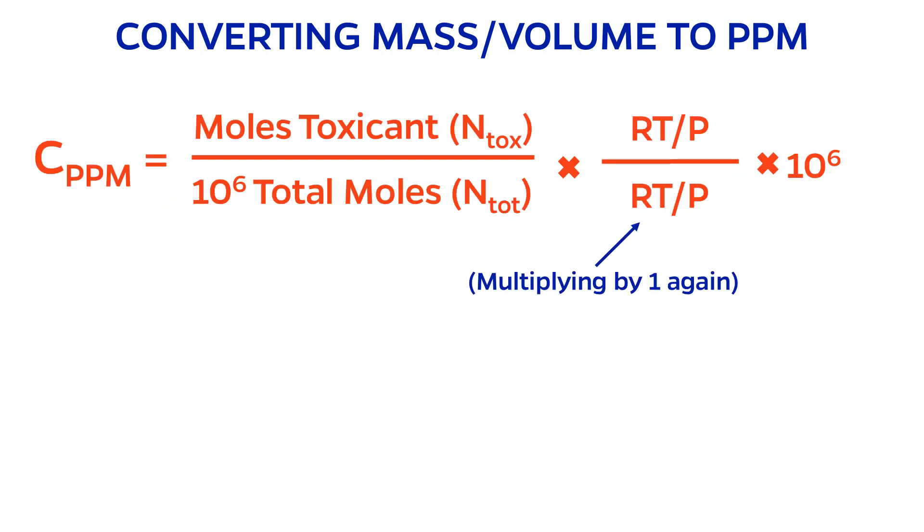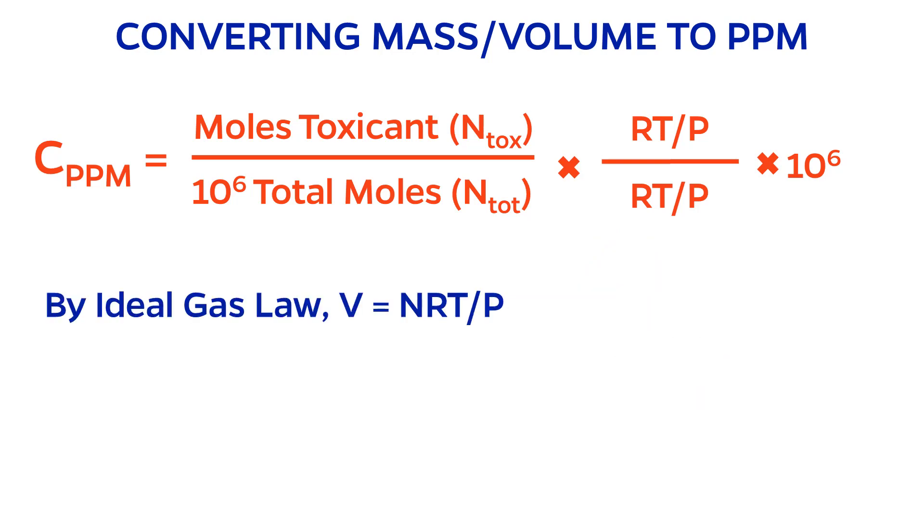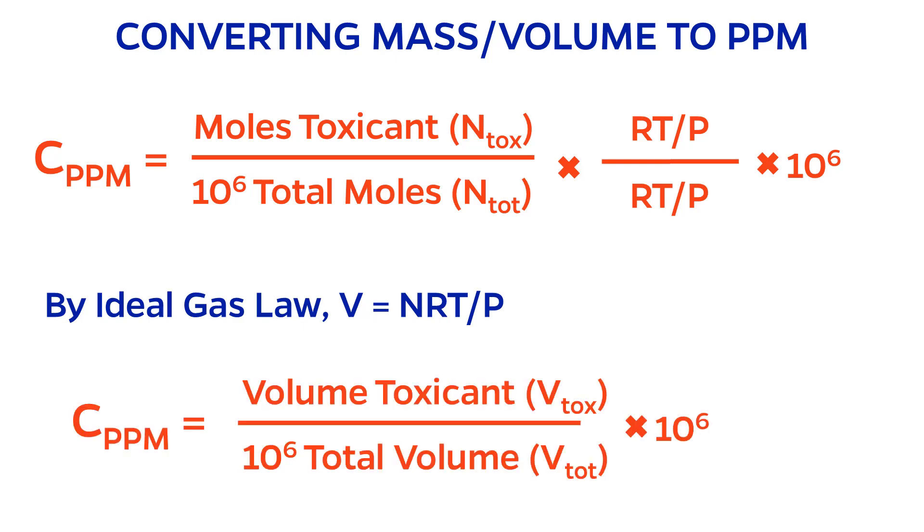I'm going to multiply by 1 again, except this time 1 is represented as R, the gas constant, times T, the temperature, divided by P, the pressure. This step might seem strange, but if we assume the ideal gas law is valid, we can say that volume is equal to nRT divided by P. Therefore, I can substitute volume for all of this.